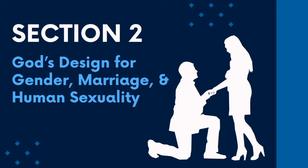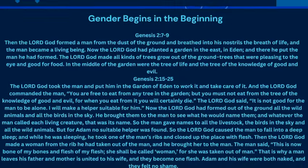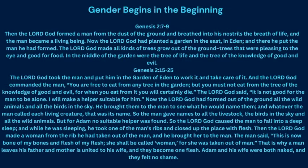Let's move on to section two: God's design for gender, marriage, and human sexuality. Gender begins in Genesis. Genesis 2:7-9 describes God forming man and placing him in the Garden of Eden. We continue in Genesis 2:15-25: 'The Lord God took the man and put him in the garden of Eden to work it and take care of it. And the Lord God commanded the man, you are free to eat from any tree in the garden, but you must not eat from the tree of the knowledge of good and evil, for when you eat from it, you will certainly die.'